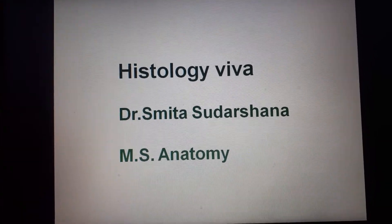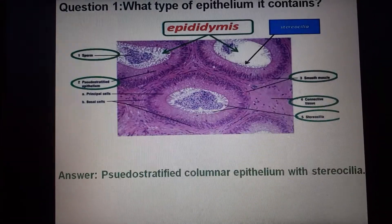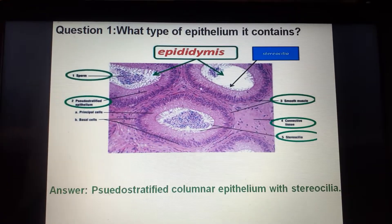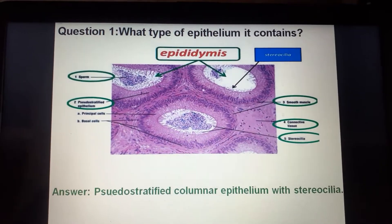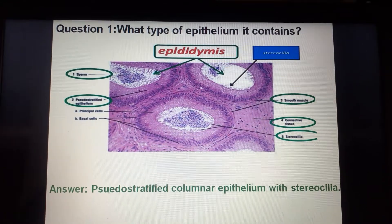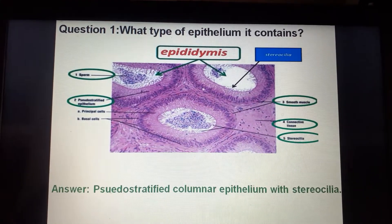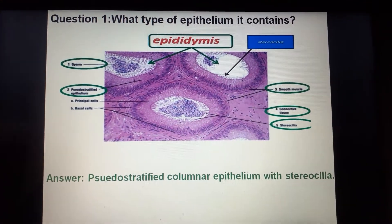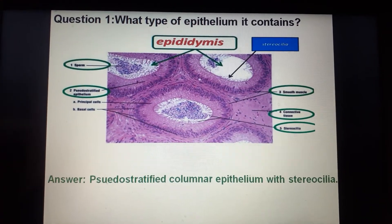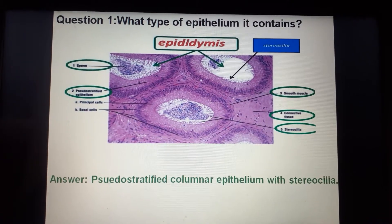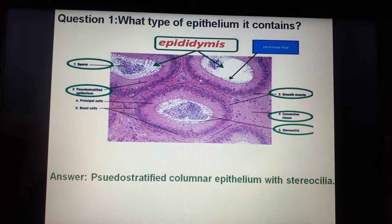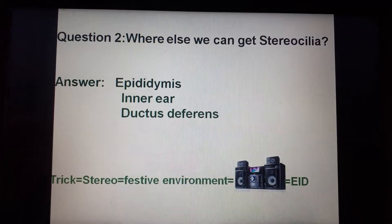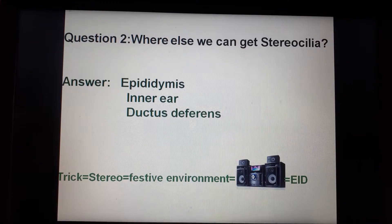These are common histology viva questions always asked in the exam. What type of epithelium does the epididymis contain? The histological slide is of epididymis, so the answer is pseudostratified columnar epithelium with stereocilia.